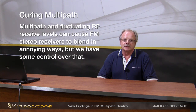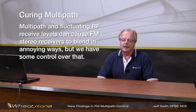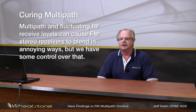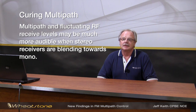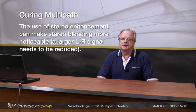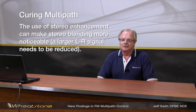When multipath is present, it can cause fluctuating RF levels in the receiver, and stereo receivers respond to that by blending toward mono. Especially in a mobile environment, that blending can be very annoying, because basically every three or four feet you're going through nulls and the audio is going in and out of stereo. There's a very large audible effect because the receiver is trying to blend to mono, blending the left and right channels together. And if the station is using stereo enhancement, you've got a very large L minus R trying to go away whenever the receiver blends, which makes that blending even more noticeable.